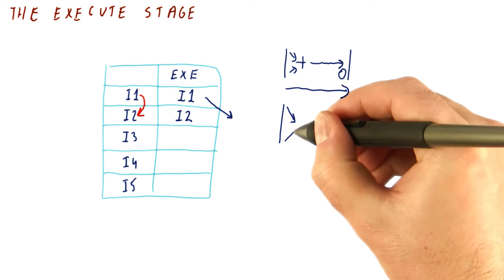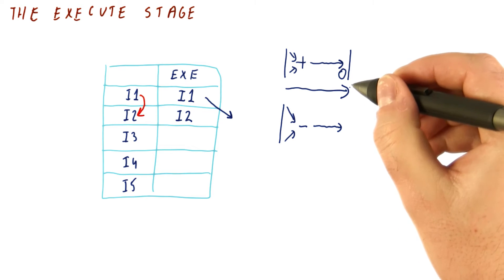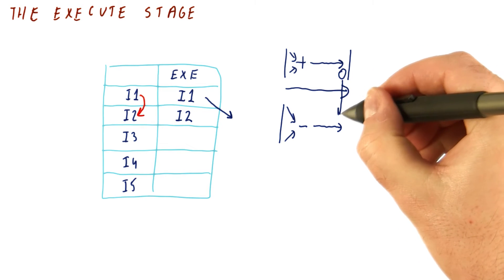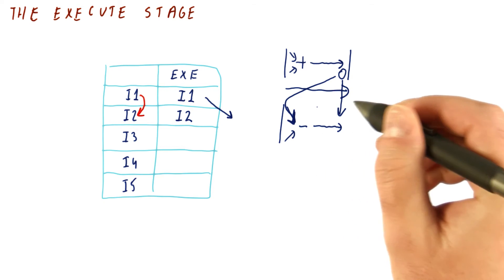Meanwhile, the other instruction is taking its values, doing a subtraction, producing a result, and this is where forwarding can provide this value. If forwarding worked, it would have to provide the value here.